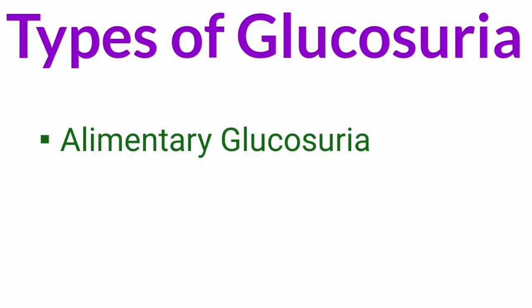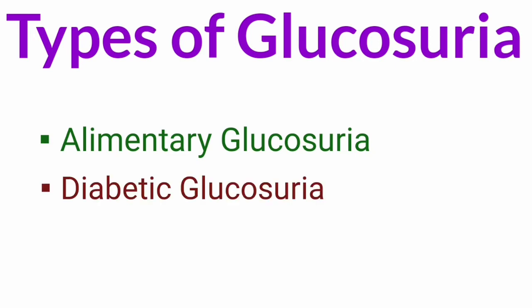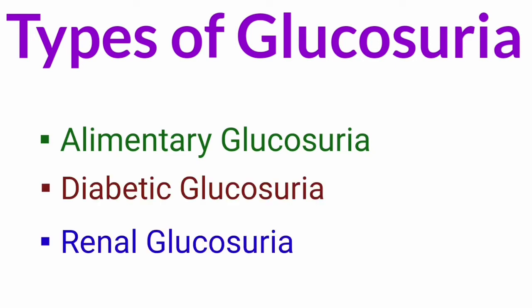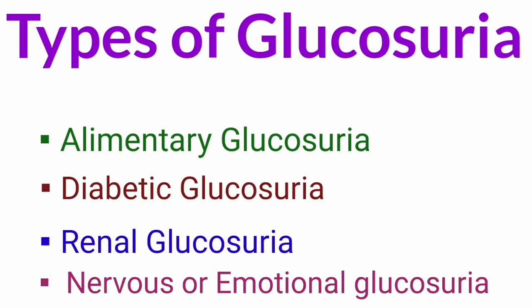Based on the cause, there are different types of Glucosuria: Alimentary Glucosuria, Diabetic Glucosuria, Renal Glucosuria, and Nervous or Emotional Glucosuria.